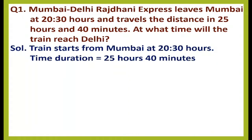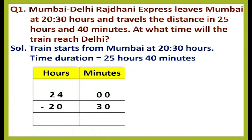The total time duration the train is taking is 25 hours 40 minutes. First we will subtract 20:30 hours from 24 hours, because in a day we have 24 hours. We cannot subtract 30 minutes from zero minutes, so we will borrow one hour from 24 hours. Since one hour equals 60 minutes, zero minutes will become 60 minutes and 24 hours will become 23 hours.